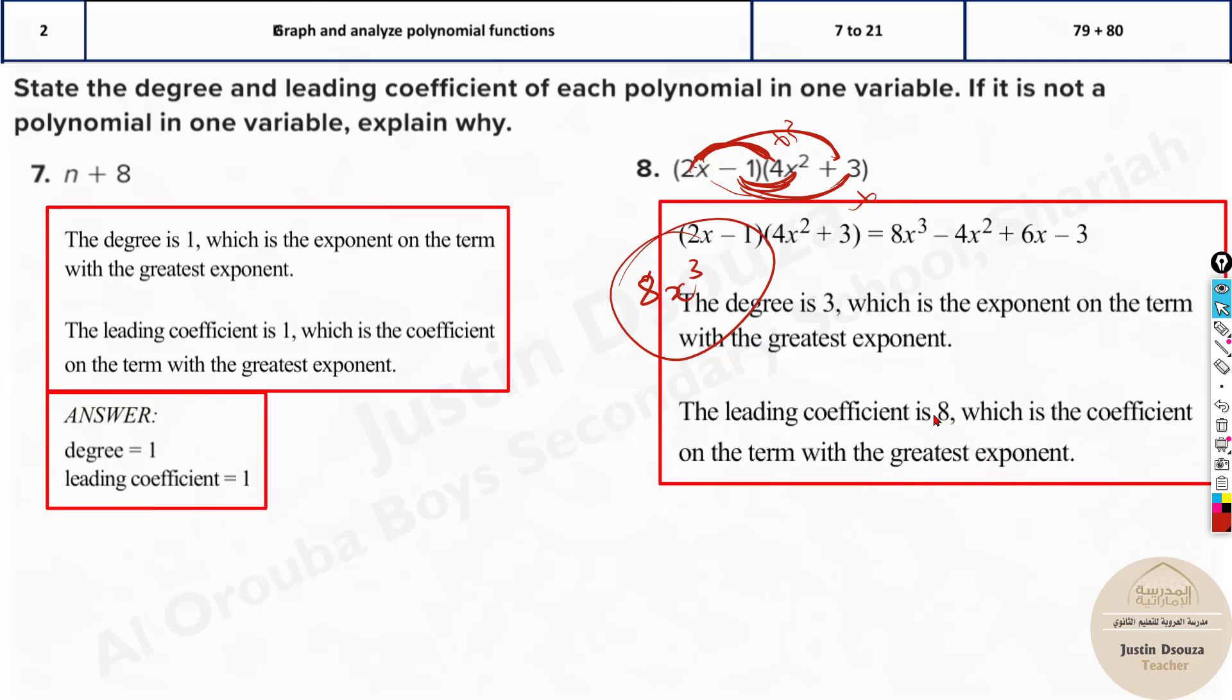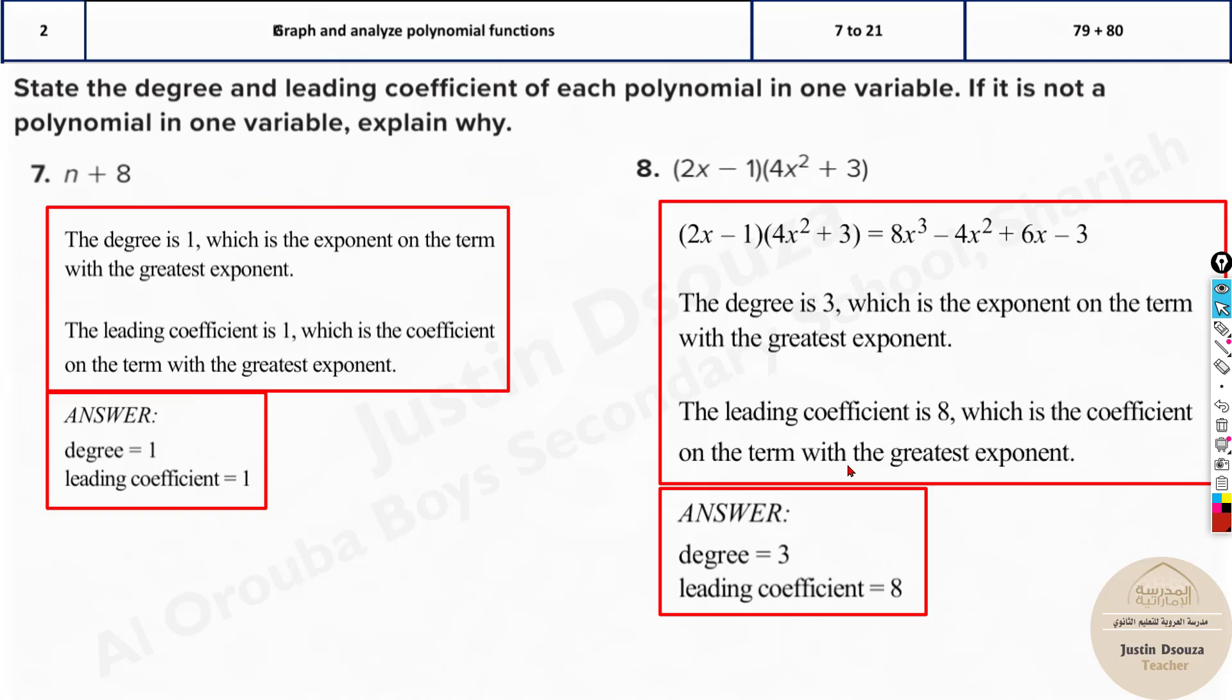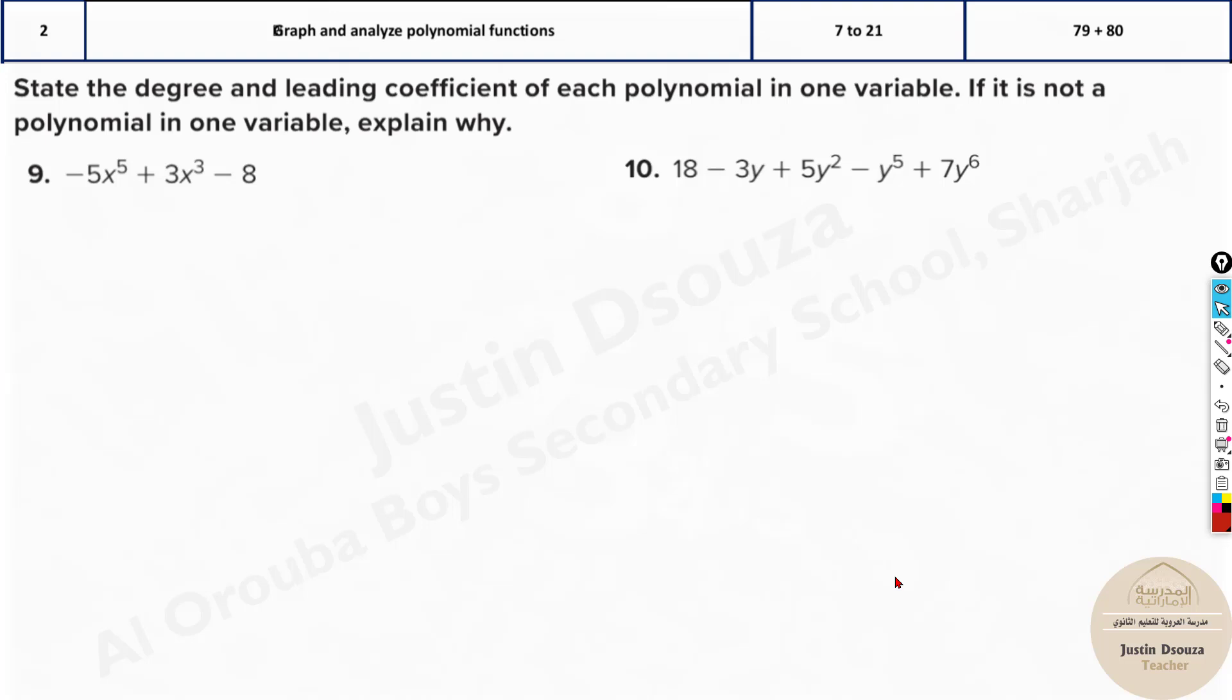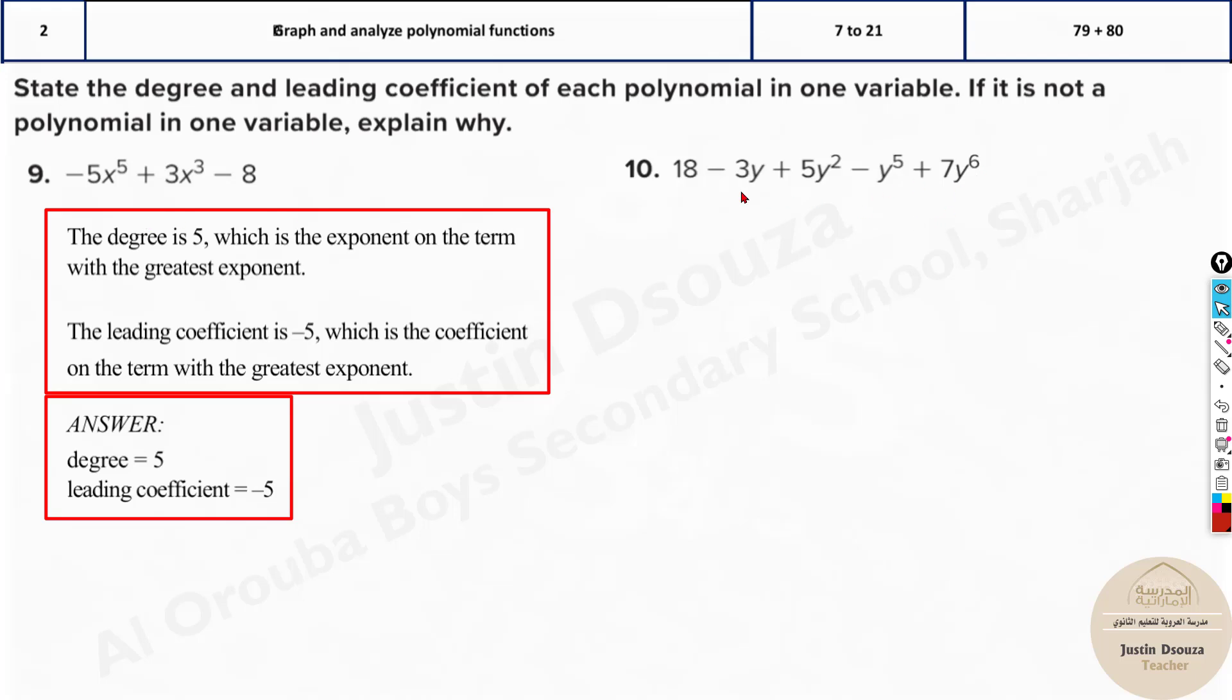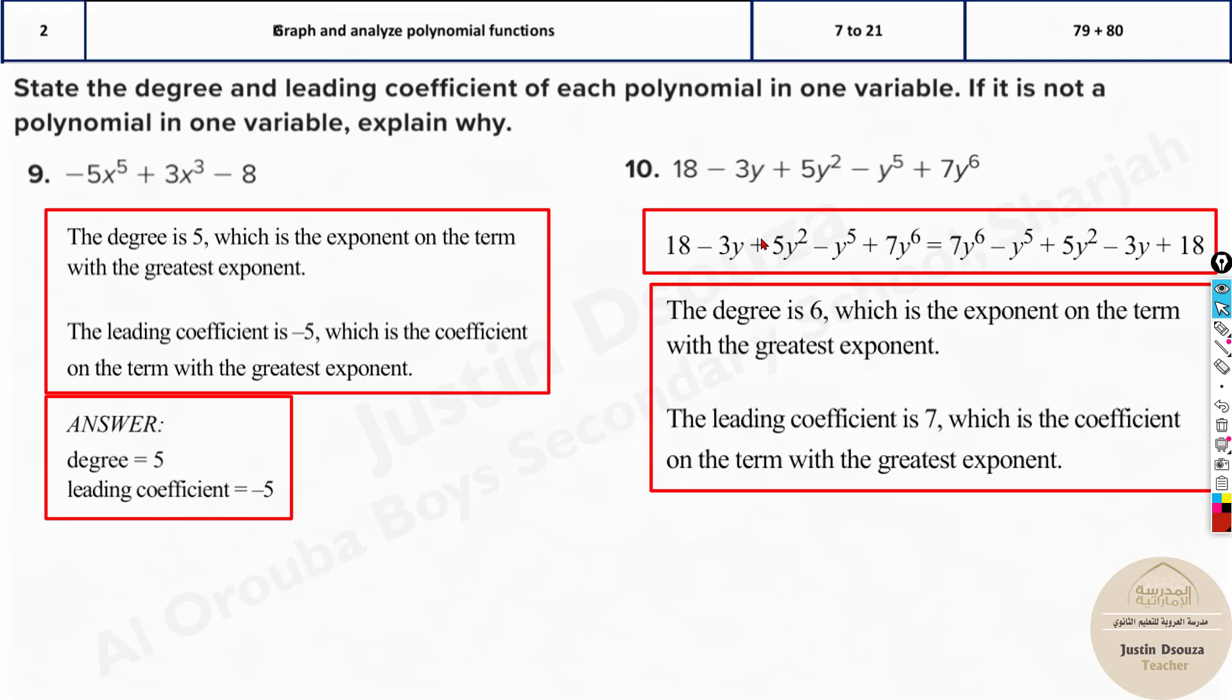The leading coefficient will be 8 and degree is 3. No matter what, the other terms will not be higher than the first one. So that's why you can stop just over there and write the answer. Because the options will be there, you have to just select the correct answer, right? Degree 3 and leading coefficient 8. Same way over here, you can see the degree is 5 and the leading coefficient is minus 5. What about this one over here? The degree is 6 and the leading coefficient is 7.